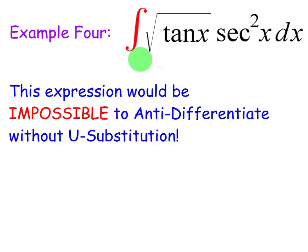Alright, let's do another u-substitution example. In this case, we have the antiderivative of the square root of tangent of x times secant squared x dx. It seems really complicated, and obviously you cannot use a normal antiderivative rule. You have to use u-substitution.